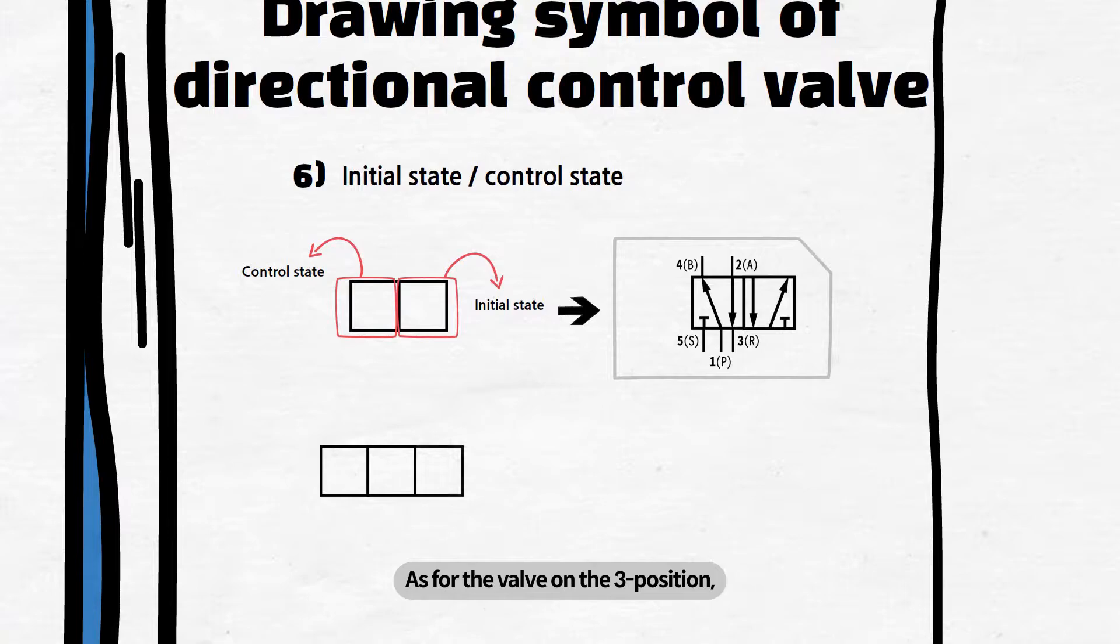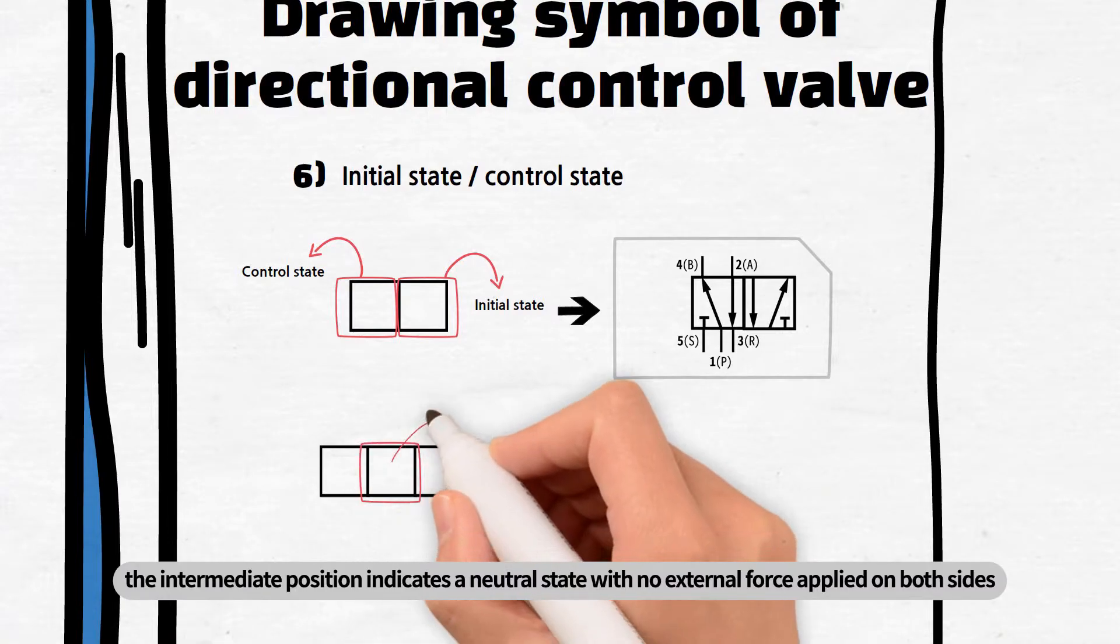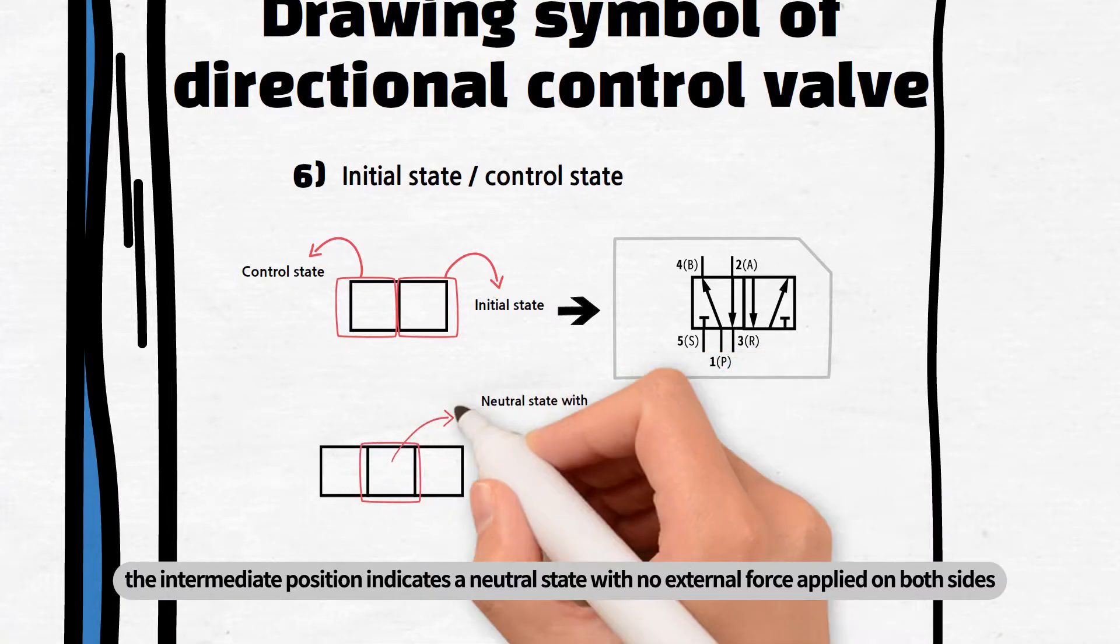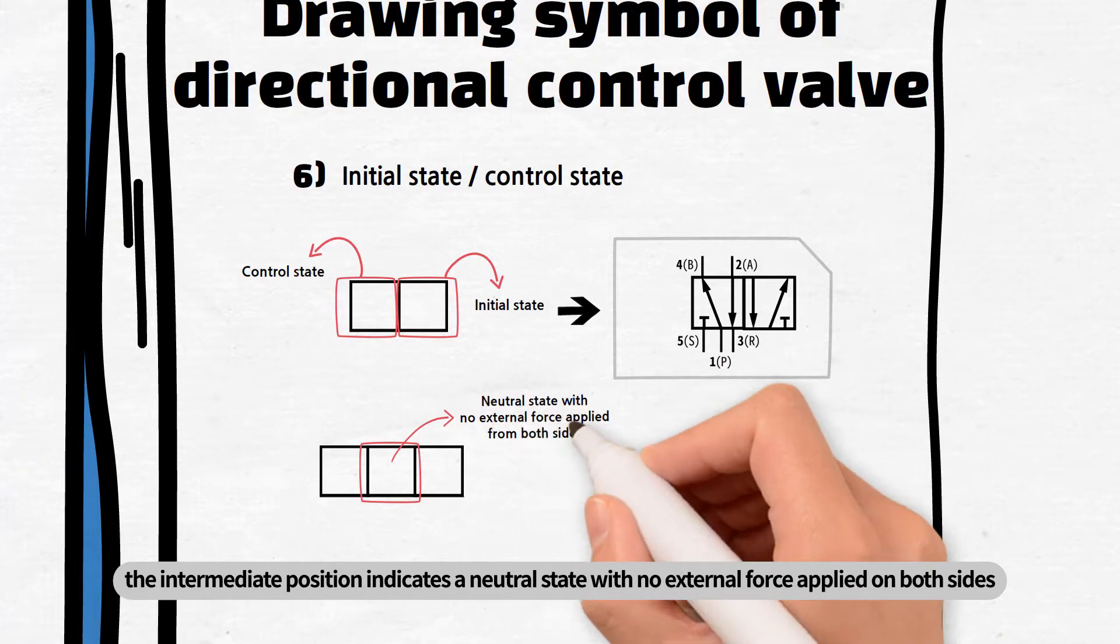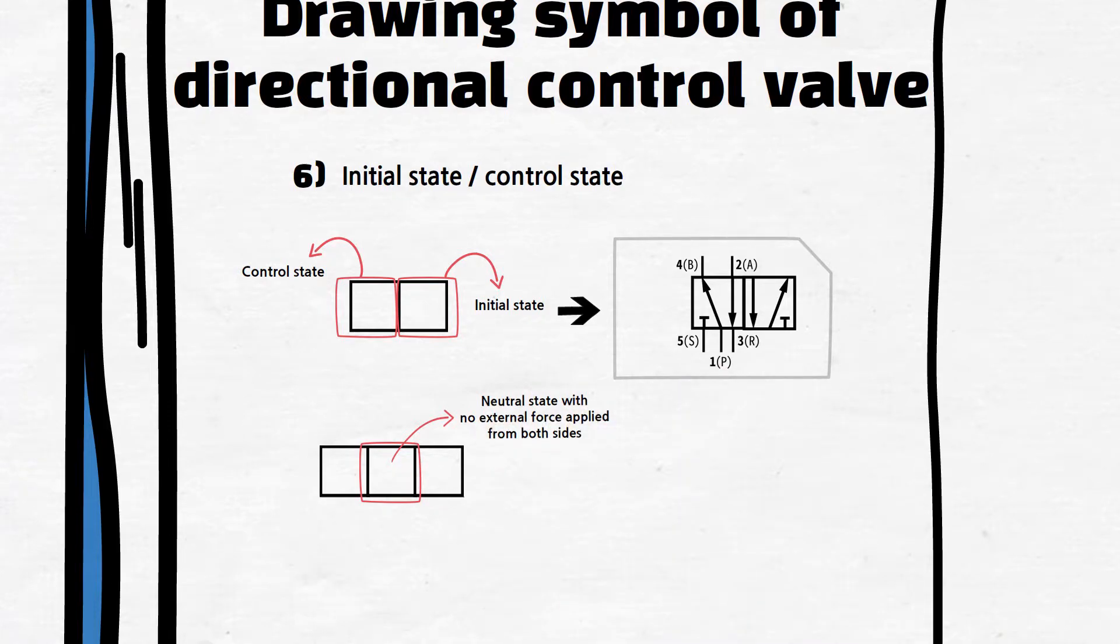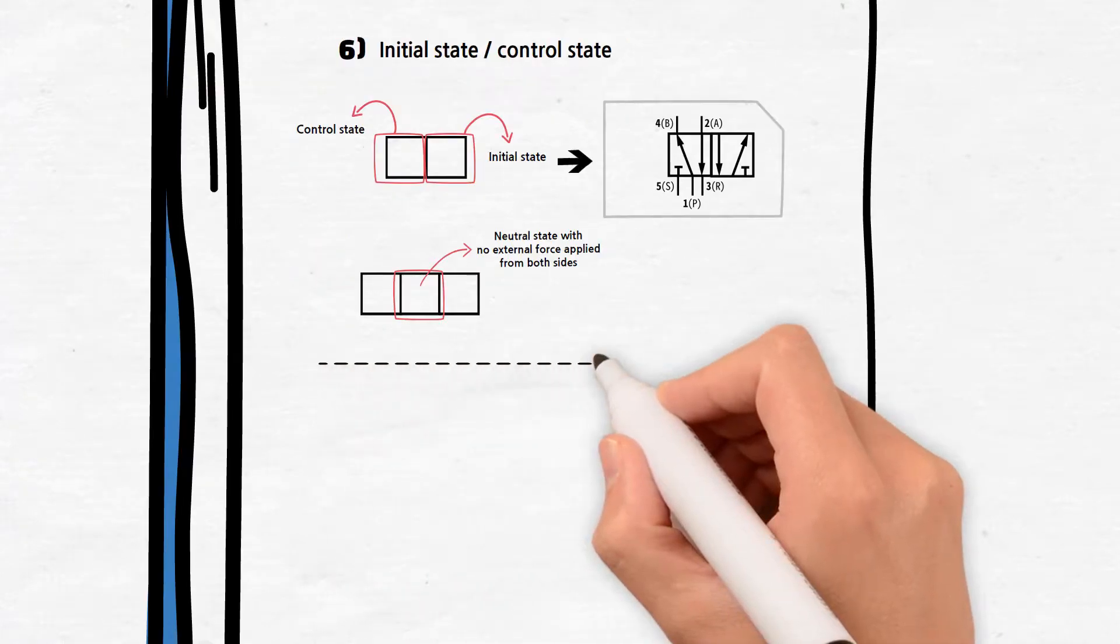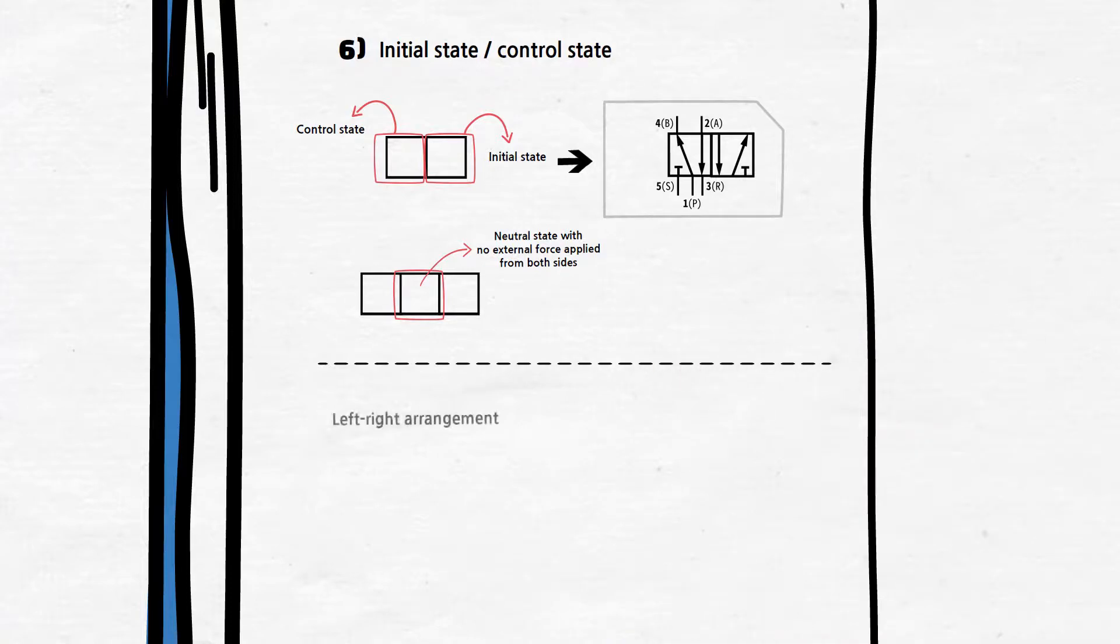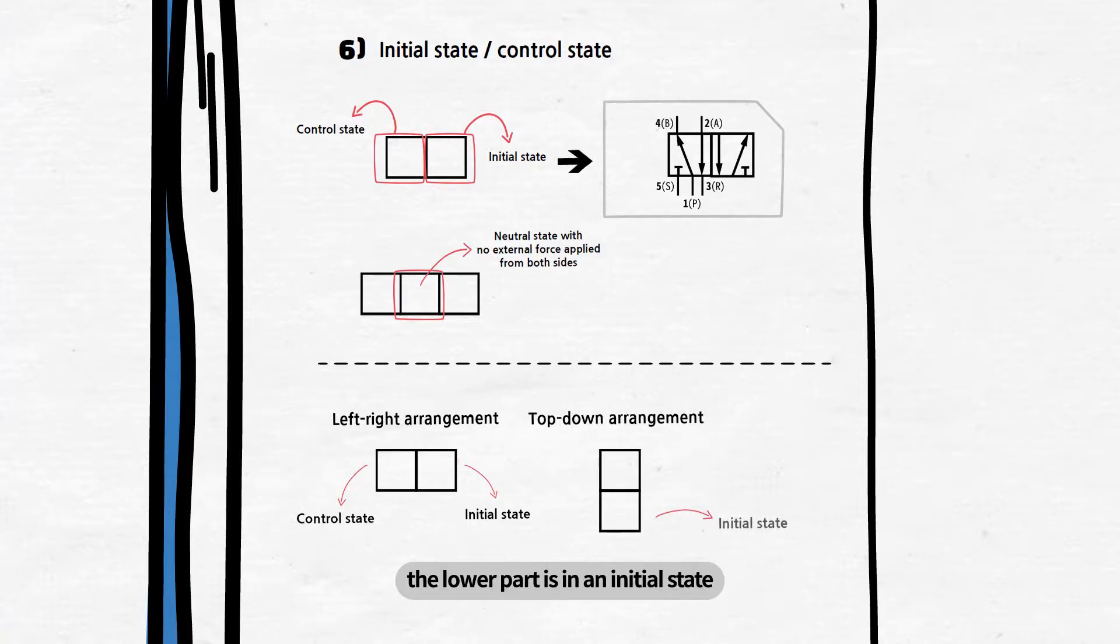As for the valve on the three position, the intermediate position indicates a neutral state with no external force applied on both sides. According to the arrangements, if the position symbols are arranged side to side, the right side is in an initial state while the left one is in a controlled state. If arranged top to bottom, the lower part is in an initial state while the upper part is in a controlled state.